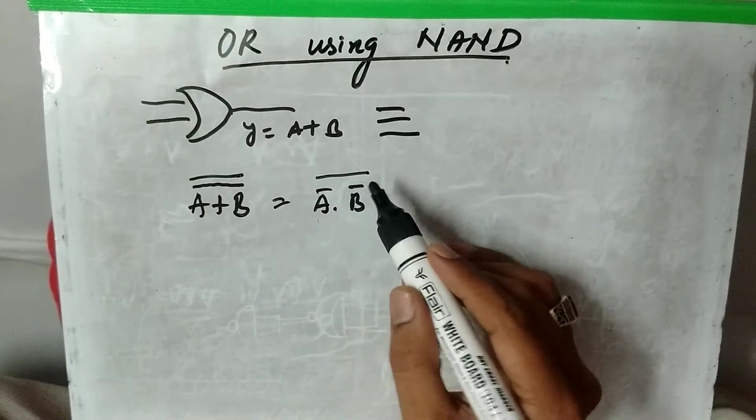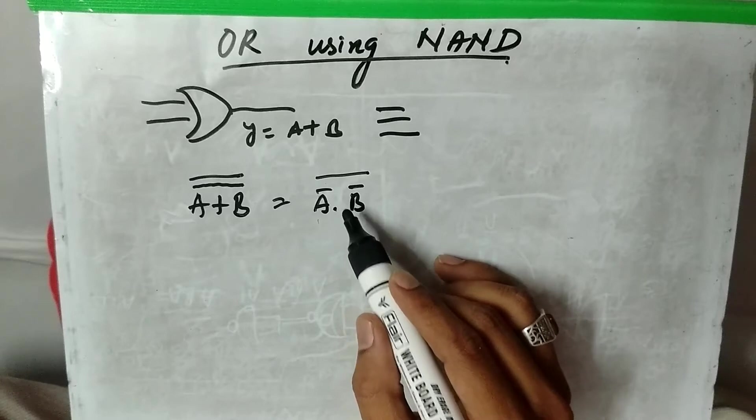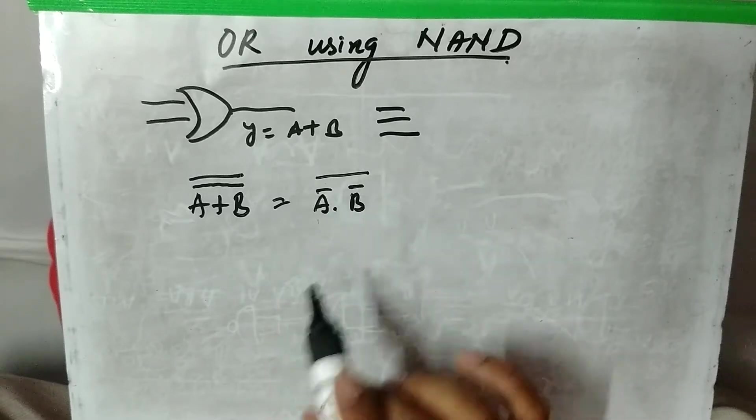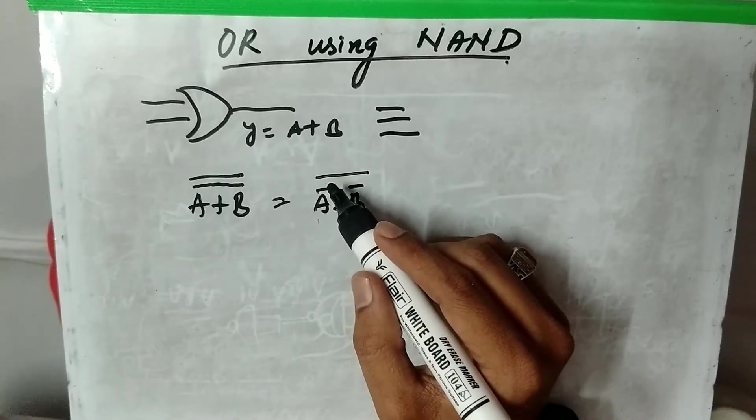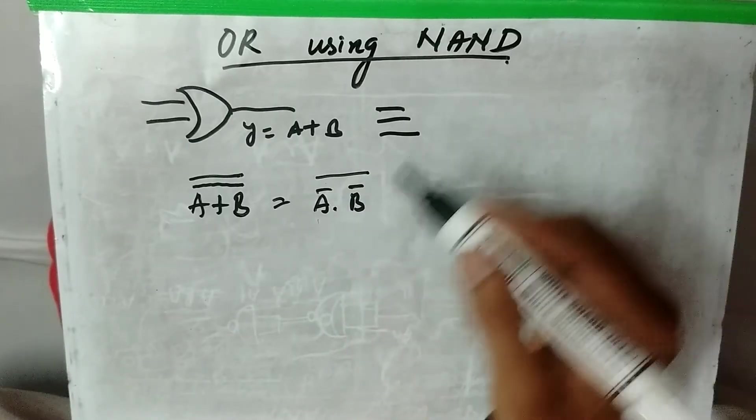Then whole dash is nothing but the output of the NAND gate. Now you can implement this output like this. Take this A, as you have seen in earlier videos, how to implement NOT gate using NAND gate.